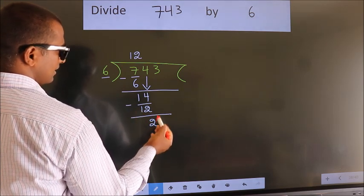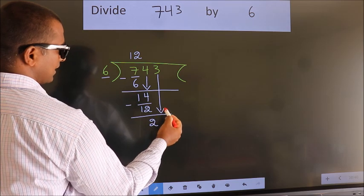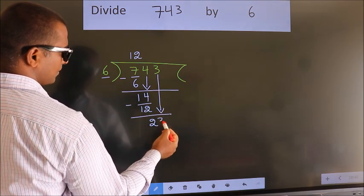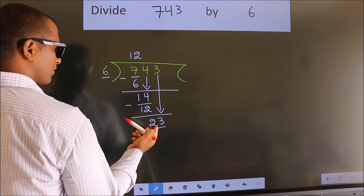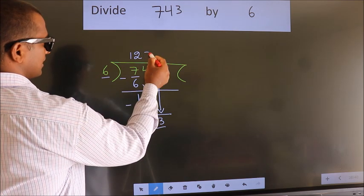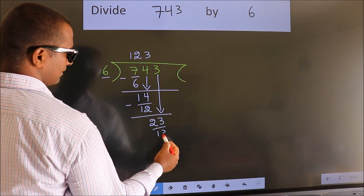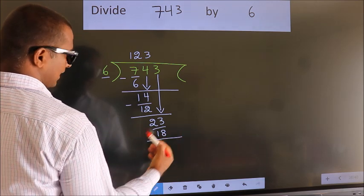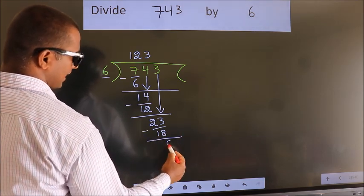After this, bring down the beside number. So, 3 down. So, 23. A number close to 23 in 6 table is 6 times 3 is 18. Now, we subtract. We get 5.